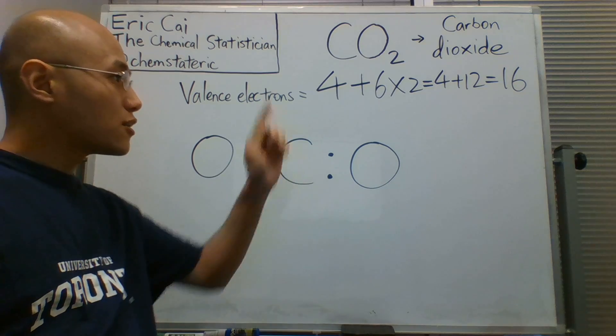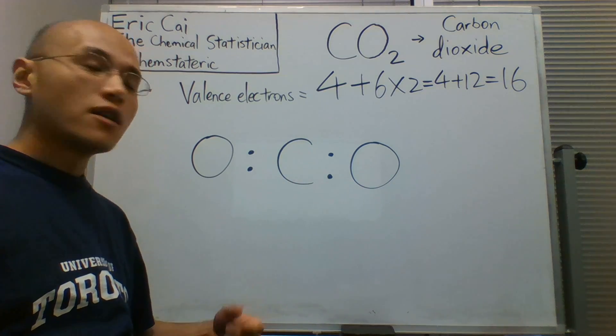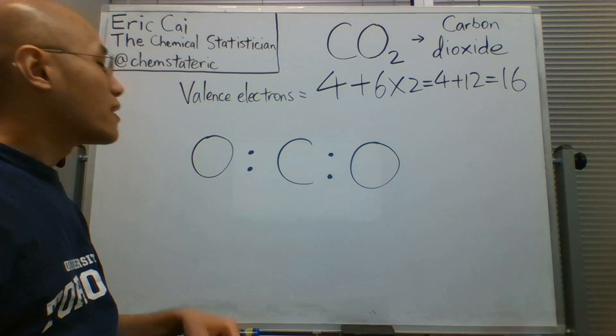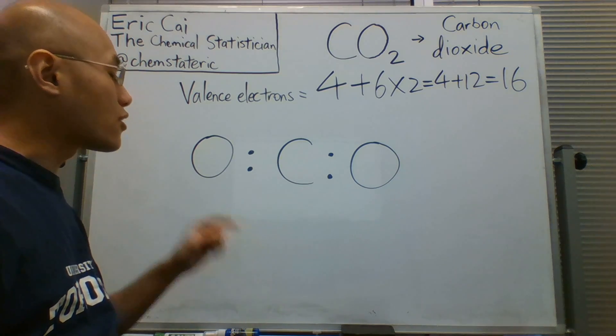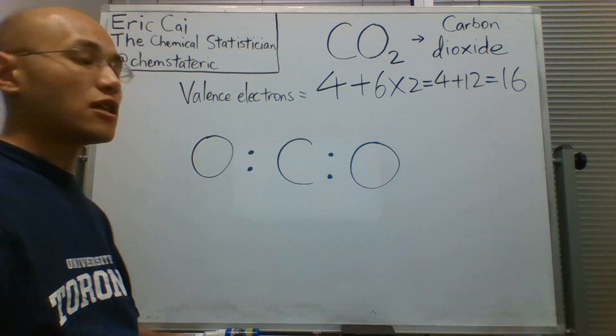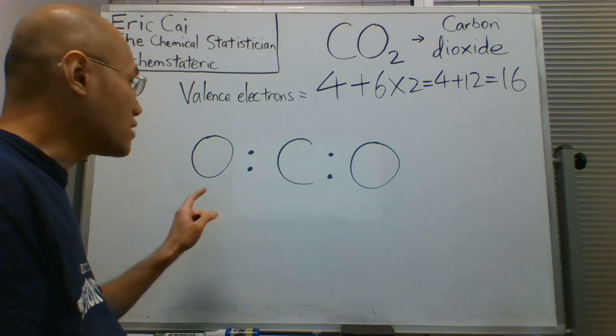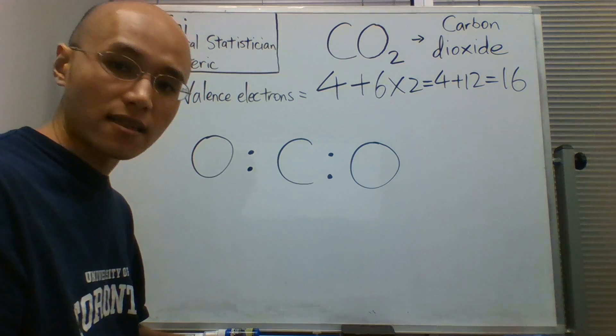That takes away 4 electrons, so we have 12 left. It would be a good idea, then, to assume that those 12 remaining electrons are split evenly between the two constituent atoms that are on the periphery. So each of these oxygens will get 6 electrons.